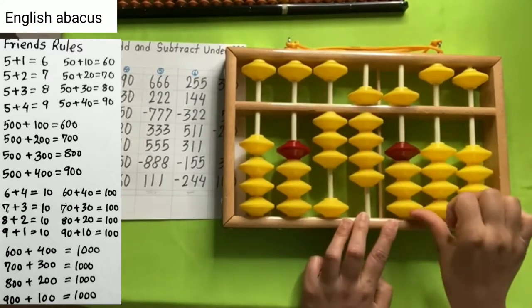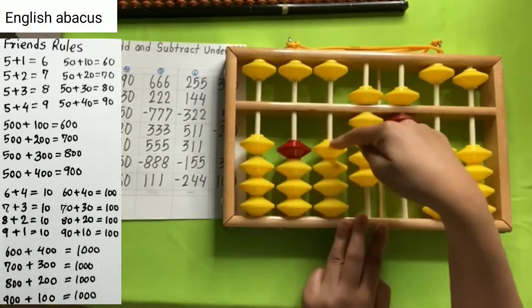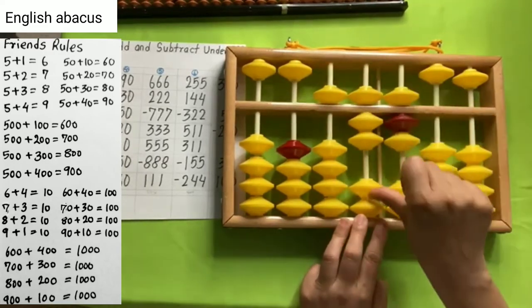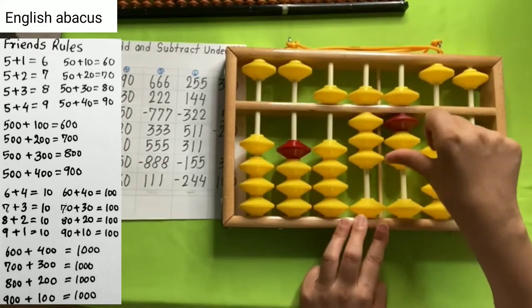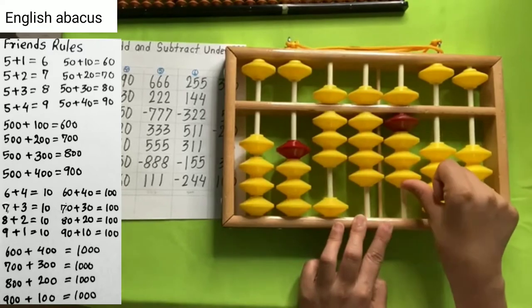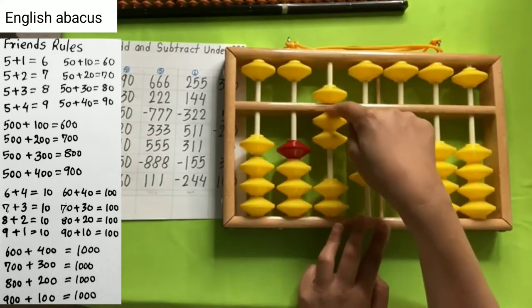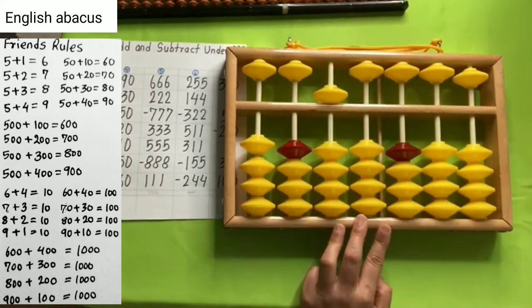Number 6. 255, 144. Reduce 322, and add 511, and 311, and reduce 155, and reduce 244. And your answer is 500.